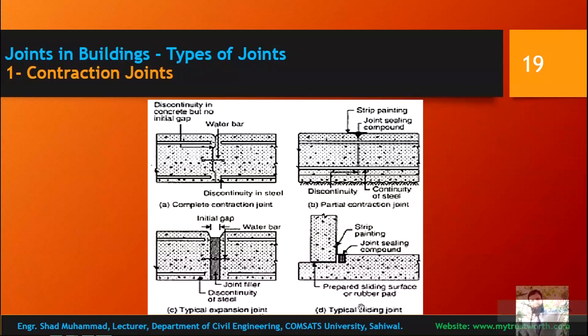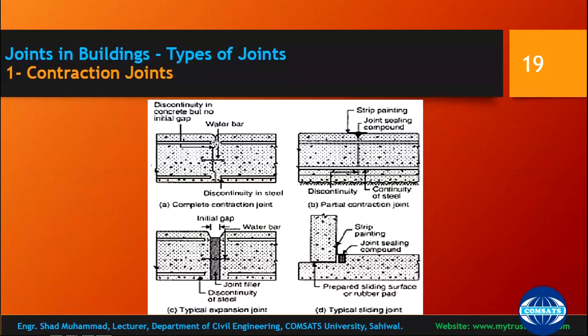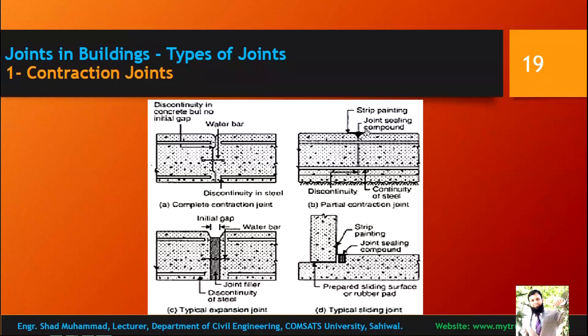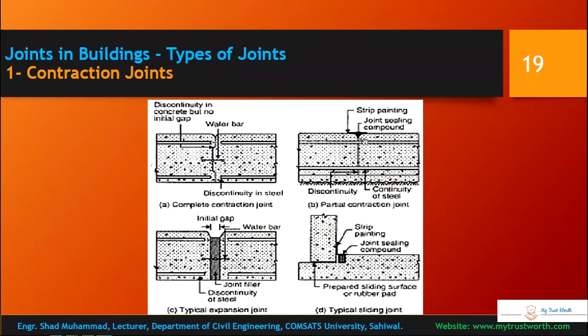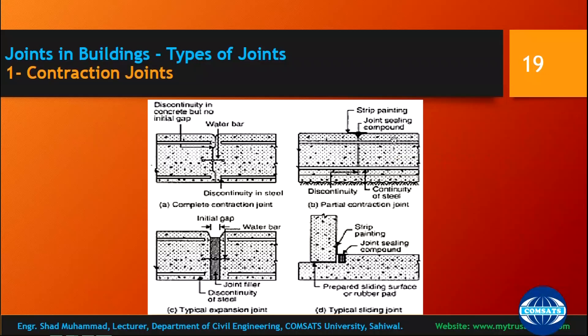Reviewing: complete contraction joint has a discontinuity in concrete and discontinuity in steel but no initial gap, along with a key provided. In a partial contraction joint, there is strip painting, joint sealing compound, and discontinuity in the member and steel — but steels are continued. If steels are continued and there is a discontinuity in concrete, water can percolate inside, causing oxidation and rusting of the steel. Rust — iron oxide — expands and disrupts the concrete member.